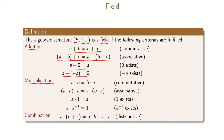For the multiplication operation, multiplication also commutes, the associative law is fulfilled, we have a multiplicative identity element, and we have the multiplicative inverse for all elements because all our elements are units. And combining the addition and multiplication operations, the distributive law is fulfilled.